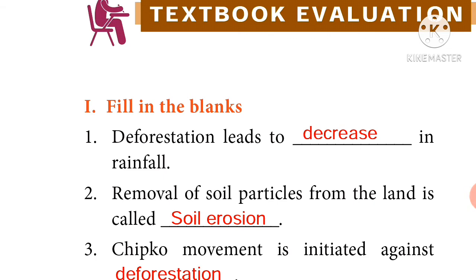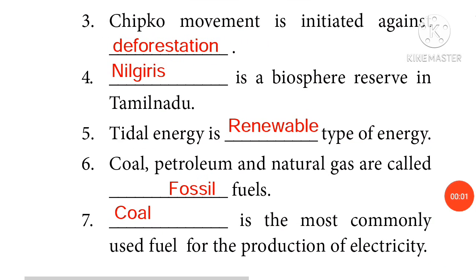Filling in the blanks answers: Deforestation leads to decrease in rainfall. Removal of soil particles from the land is called soil erosion. Chipko movement is initiated against deforestation. Nilgris is a biosphere reserve in Tamil Nadu. Tidal energy is a renewable type of energy. Coal, petroleum and natural gas are called fossil fuels. Coal is the most commonly used fuel for the production of electricity.